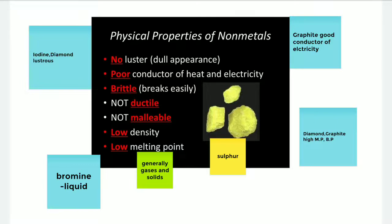Iodine and diamond have luster. Even though non-metals generally exist as gases and solids, bromine is a liquid non-metal.